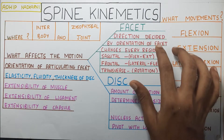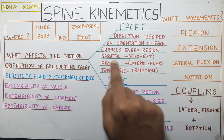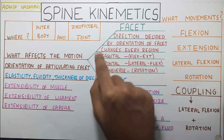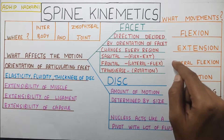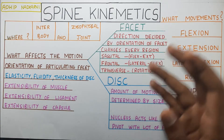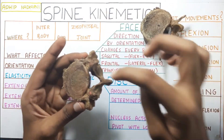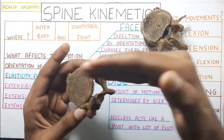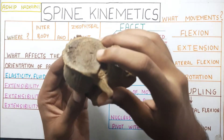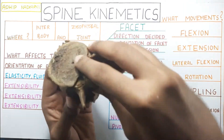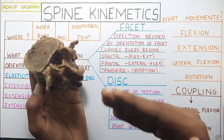The orientation of the facet changes from region to region. If the facet orientation is in the sagittal plane, the major movement occurring in that region would be flexion and extension. Taking the lumbar vertebra and looking at the facets — the facets are more in the sagittal plane. So the movement that will be occurring will be in the sagittal plane, that is flexion and extension, because the orientation of the facet is in the sagittal plane.